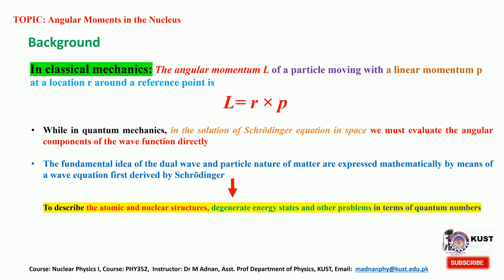In quantum mechanics there are several angular momentum operators. The total angular momentum is usually described by J, which is the sum of two momenta - the orbital angular momentum and the spin. The classical definition of orbital angular momentum L = R cross P can be carried into quantum mechanics by interpreting R and P as the operators associated with position and linear momentum.